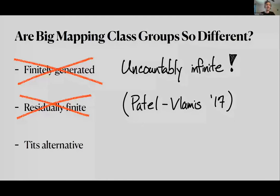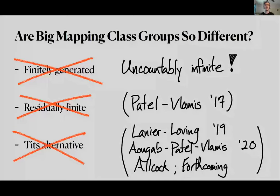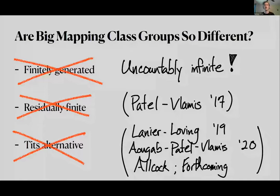Lastly, mapping class groups usually satisfy something called the Tits alternative, and there has been a lot of activity showing that big mapping class groups do not satisfy it. Linear and Loving showed they don't satisfy the strong Tits alternative. In a paper released just two weeks ago, Algab, Patel, and Vlamis showed that infinite genus mapping class groups don't satisfy this alternative, and in forthcoming work, Alcock shows this is true for any infinite type surface.